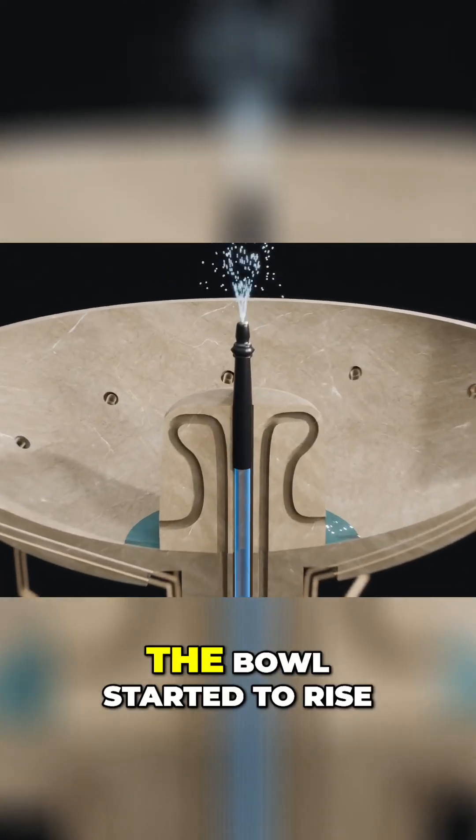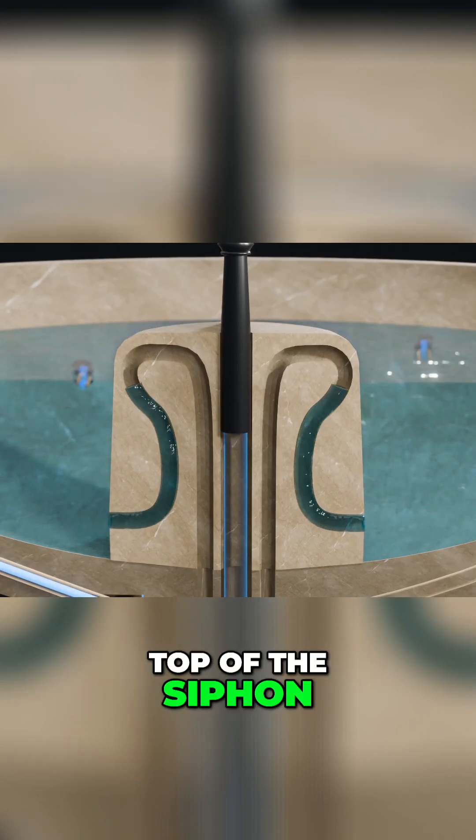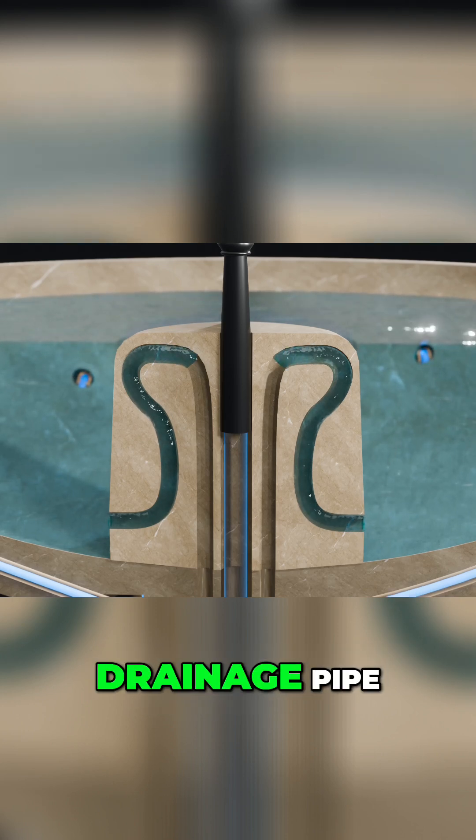As the water inside the bowl started to rise, so did the water in the siphon. Once it reached the top of the siphon, it would curve and start falling down the drainage pipe.